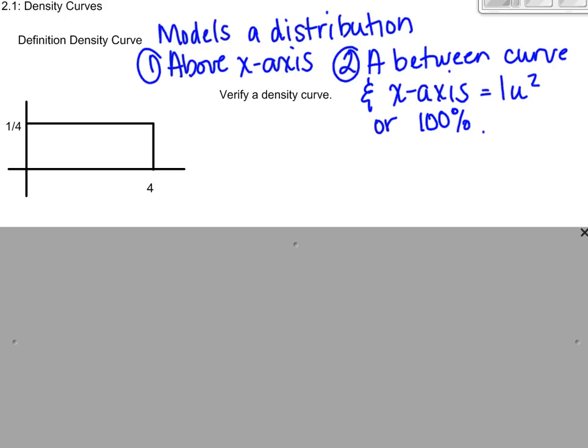So let's look at a problem really quickly from Chapter 7. I have a density curve over here, and I want to verify that it's a density curve. Number one, it is above the x-axis. So I'm just going to check that off. Two, I'm going to check the area. The area is base times height. Four times a fourth is one unit squared, or again, we're going to call it one or 100%.